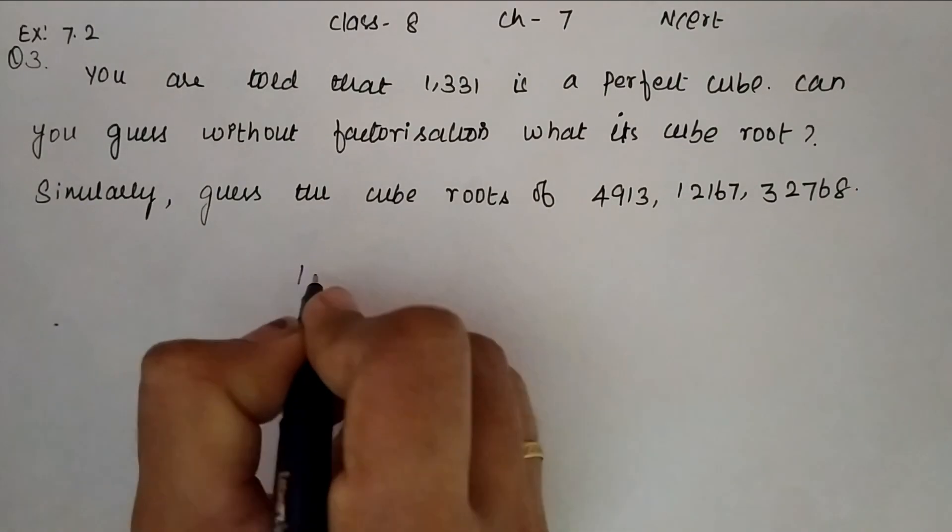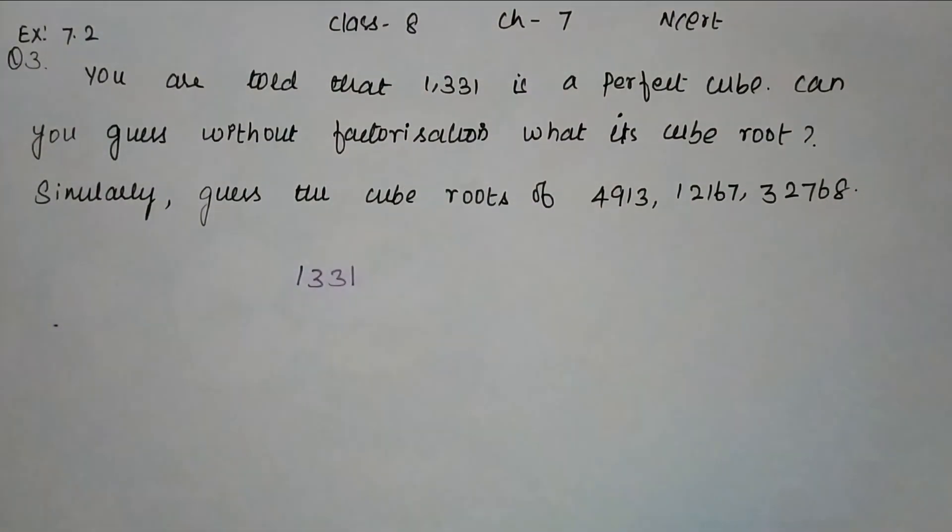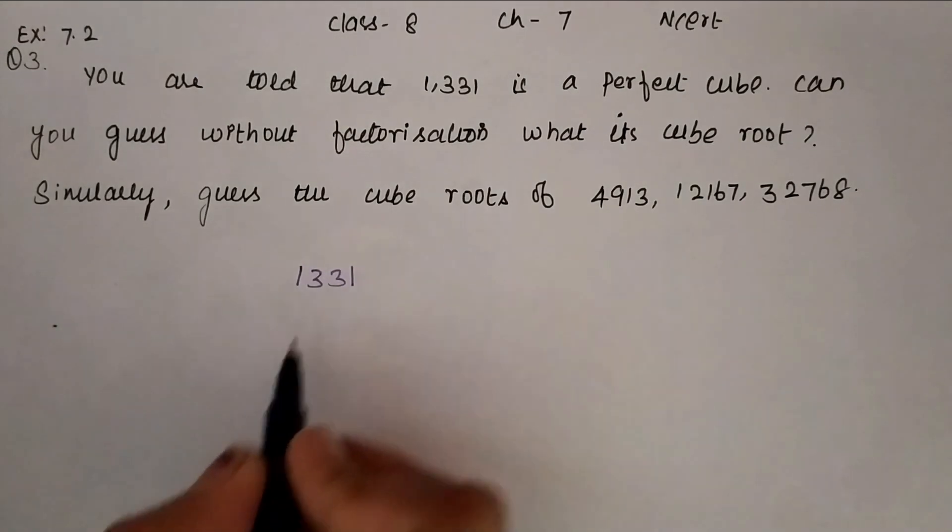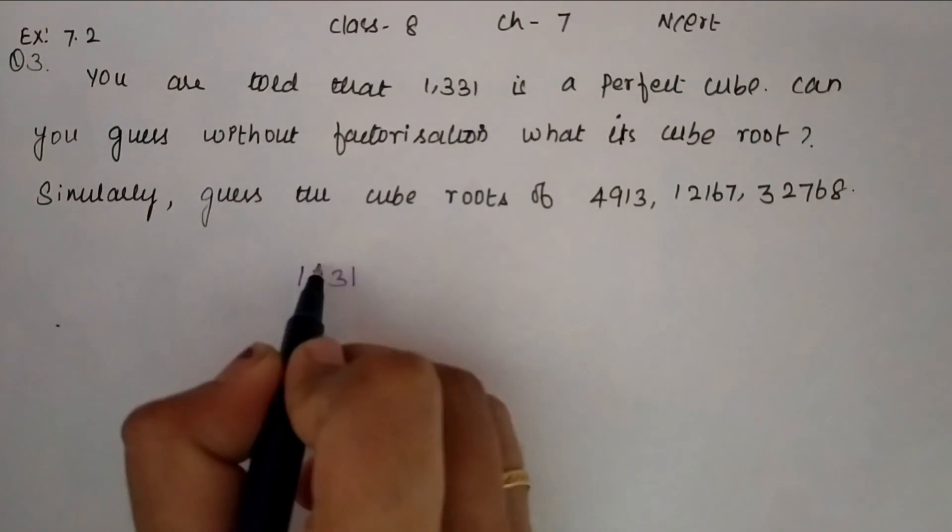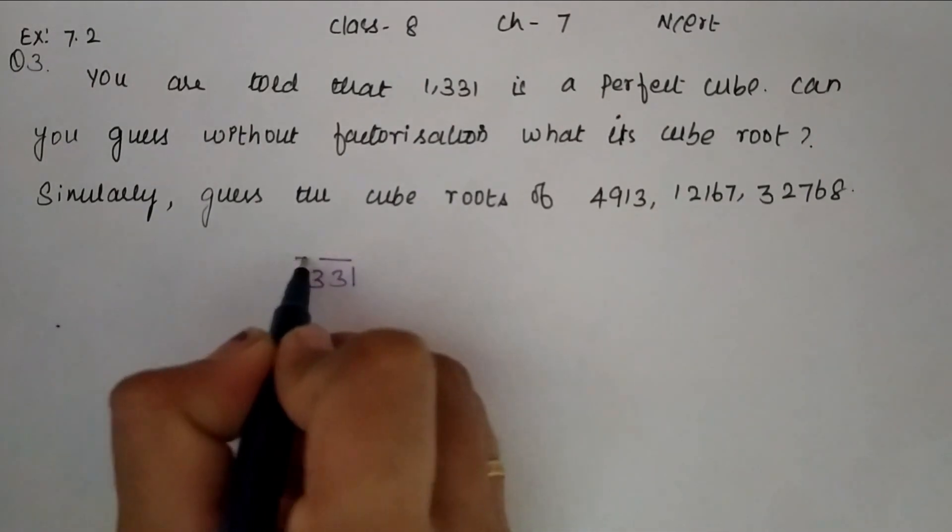Without factorization, we have to find the cube root of 1331. For that, first we have to group into three digits starting from unit's place. This is one group and this is second group.